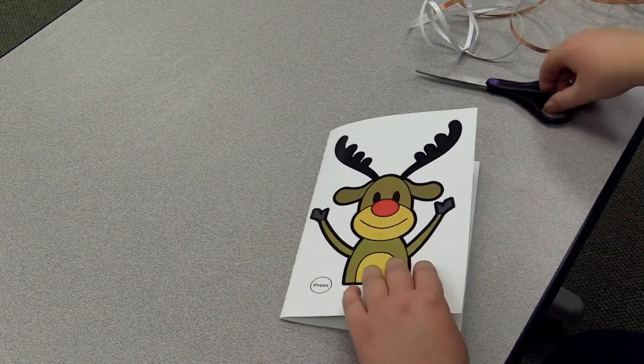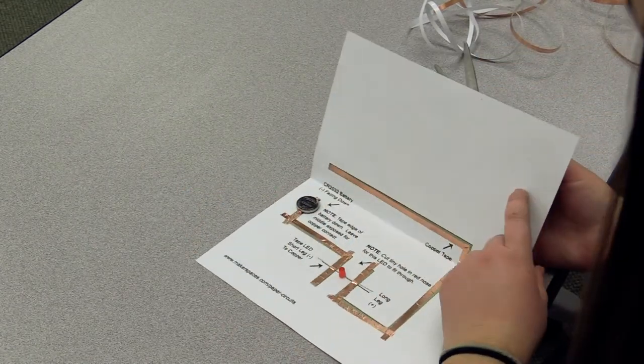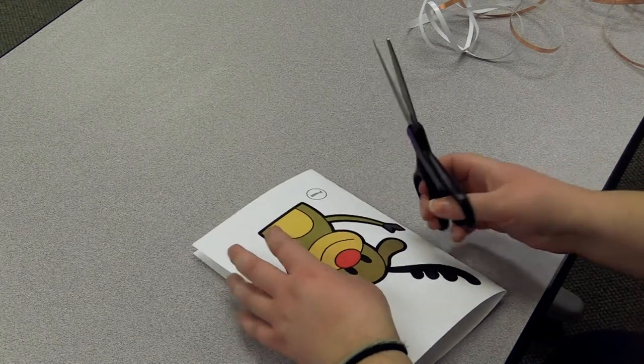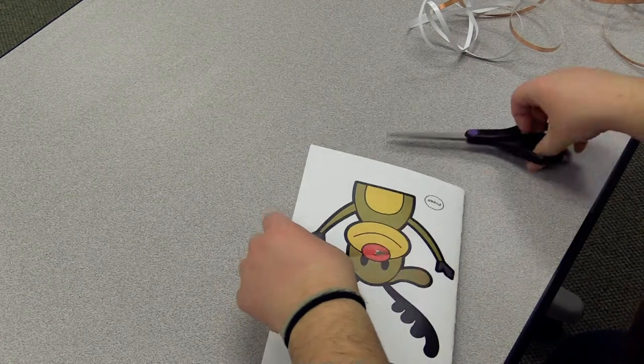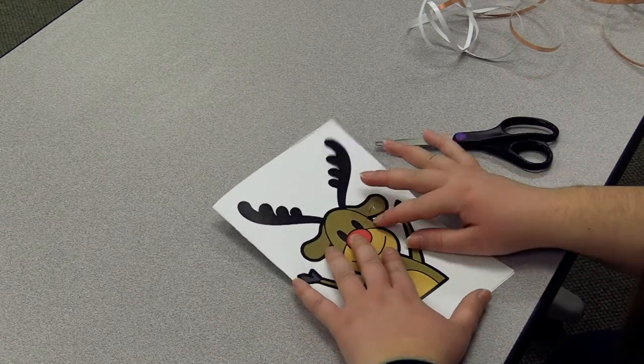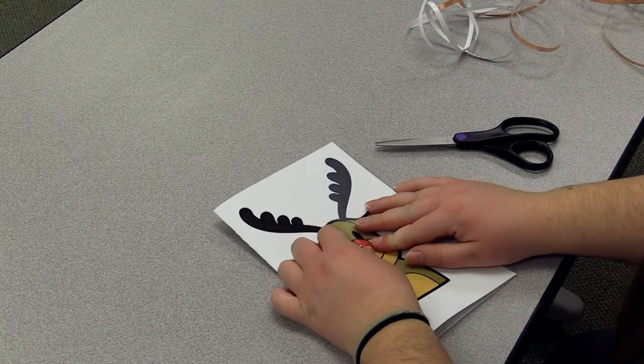Oh, the one part I'm forgetting. You need to cut a hole in the nose of the reindeer that lines up with the light so that it actually pokes through. It's just a little bit hard to see. So you want to make sure that you get it through. There we go.